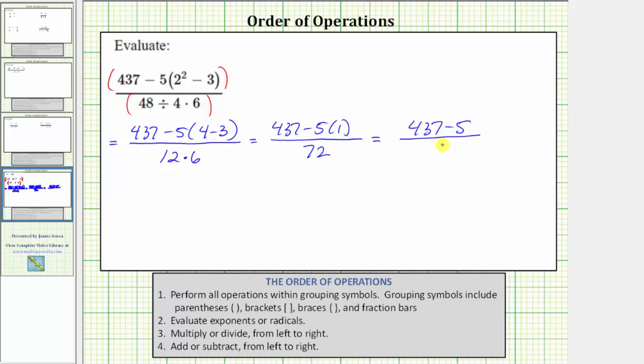The denominator remains 72. And now in the numerator, 437 minus five equals 432. So the expression simplifies to 432 over 72.